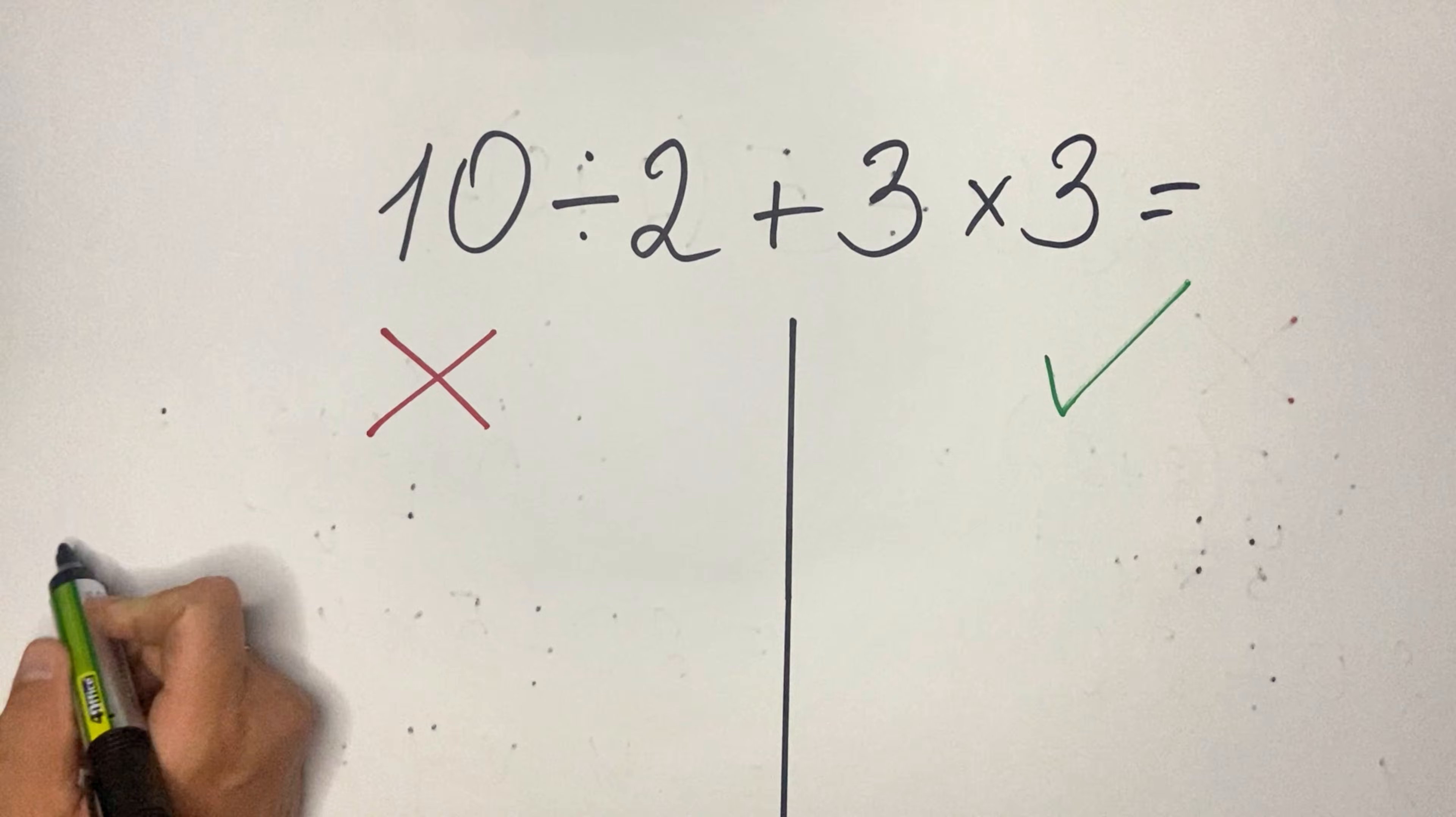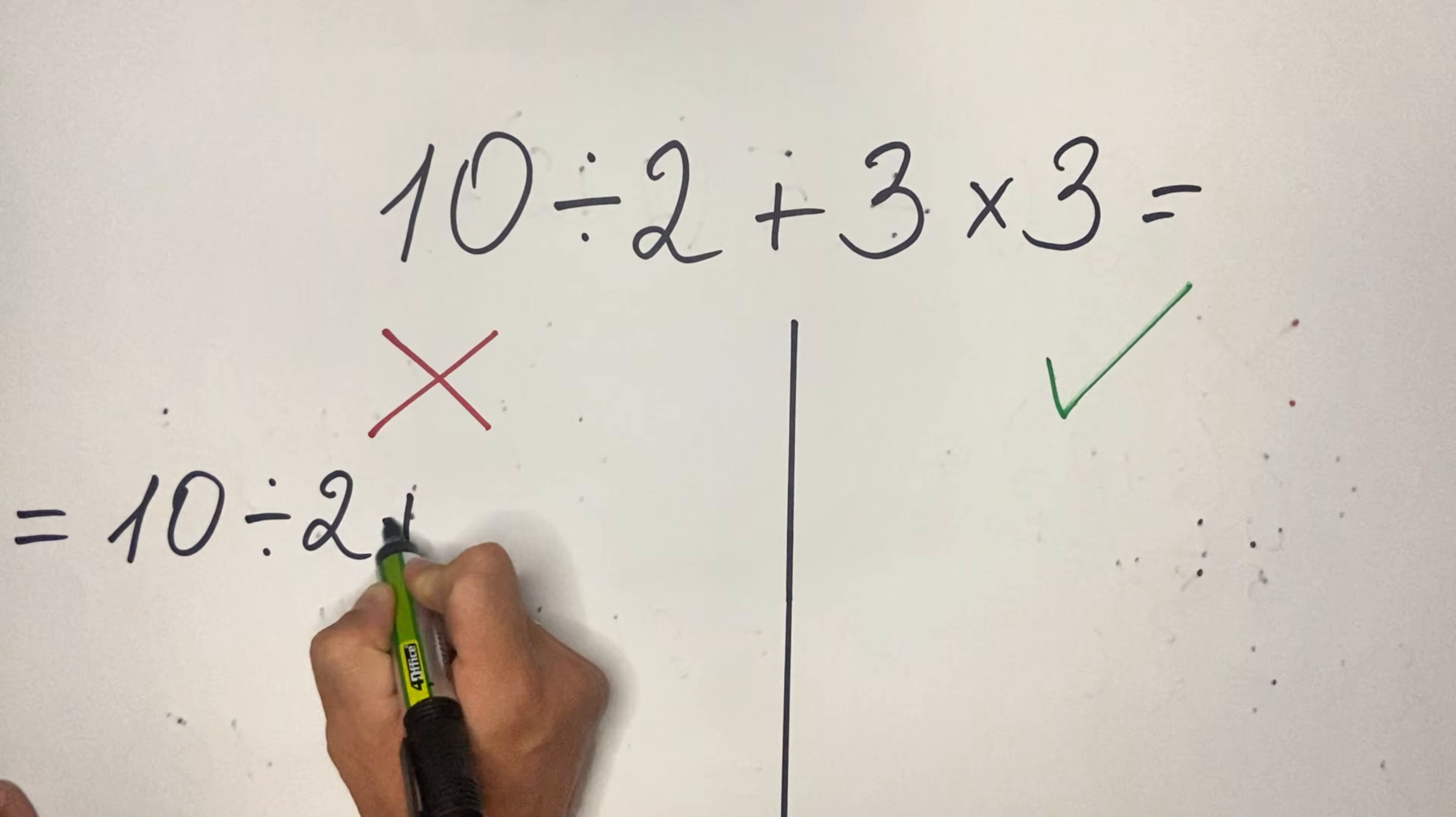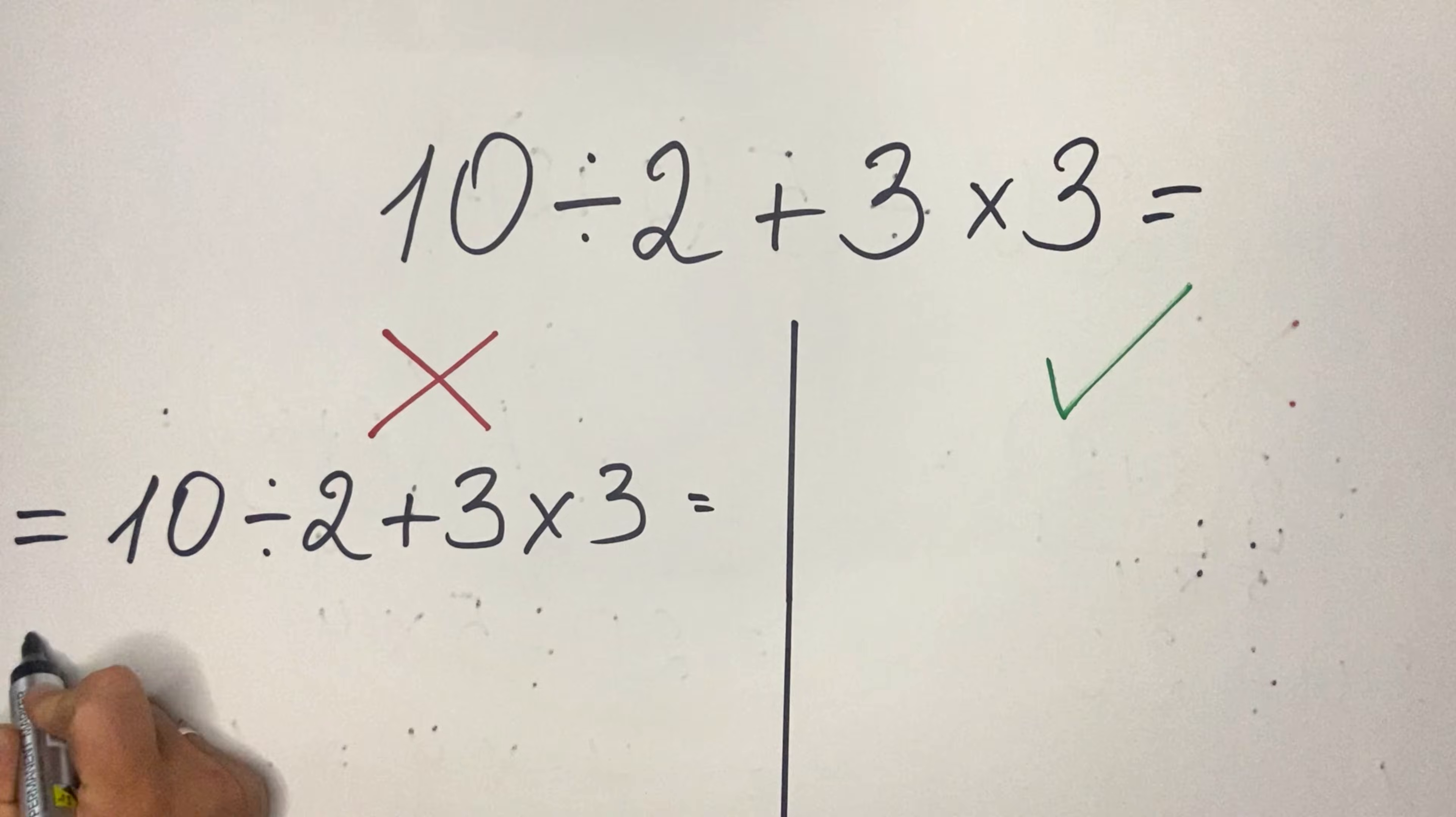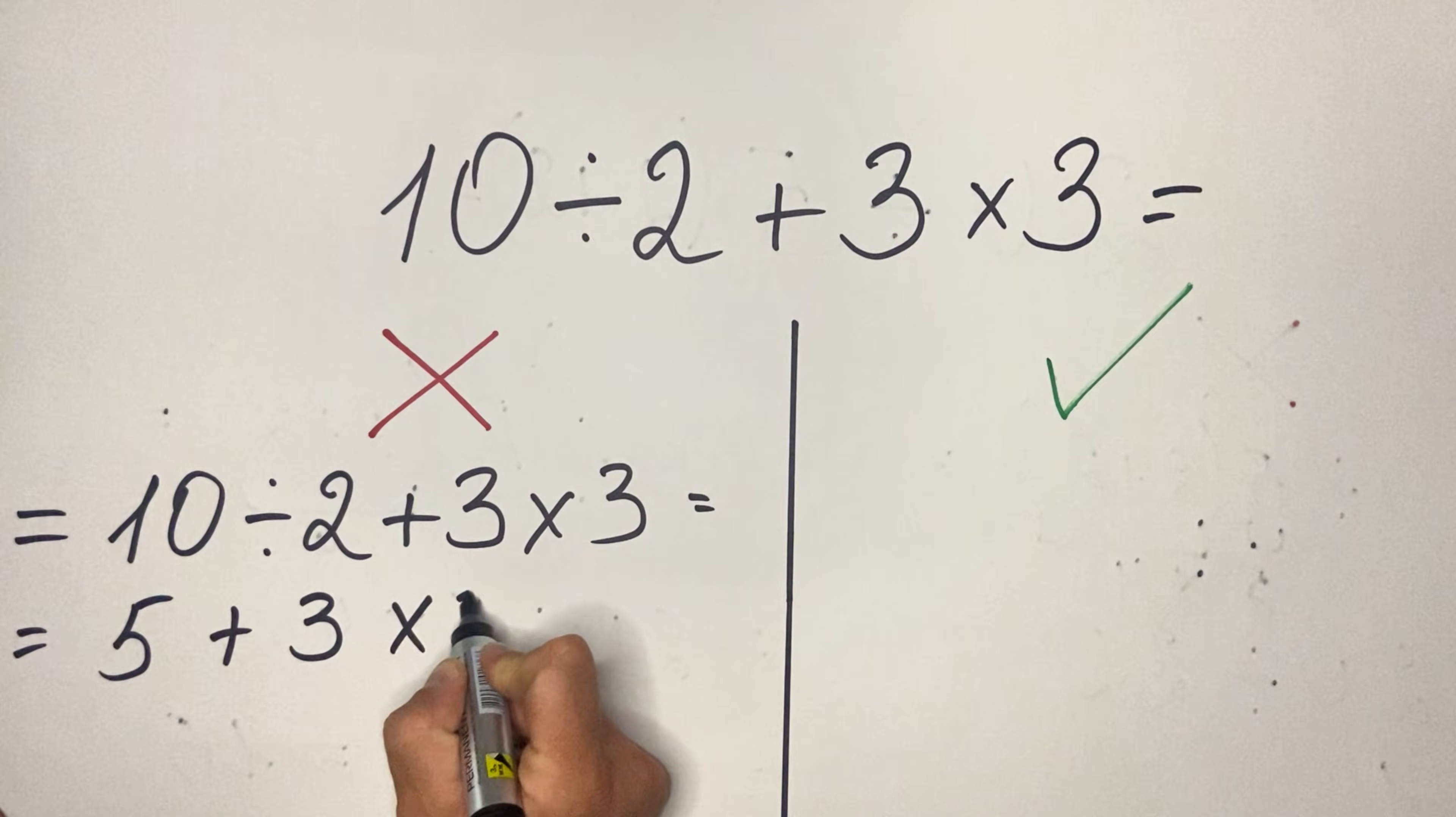So basically what they do, let me show you here on the left: they first do 10 divided by 2, which is 5, so they get 5 plus 3 multiplied by 3.